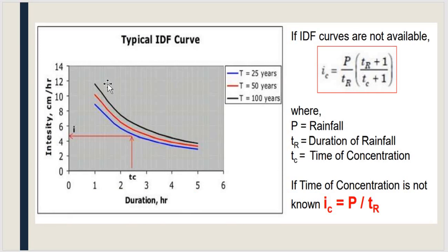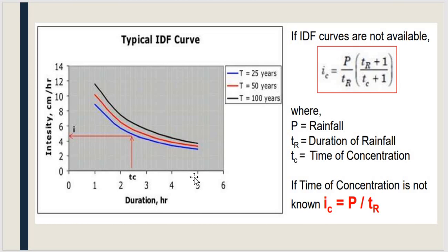The rainfall intensity is calculated using IDF curves — Intensity Duration Frequency curves. If the IDF curve is already prepared, you can calculate intensity according to duration. Curves are prepared for 25, 50, and 100 years. If the IDF curve is not available, use the formula: Ic = P/tr × (tr + 1)/(tc + 1), where P is rainfall, tr is duration of rainfall, and tc is time of concentration. If tc is unknown, this simplifies to Ic = P/tr.